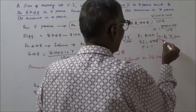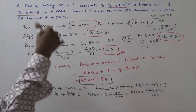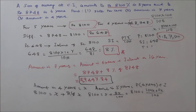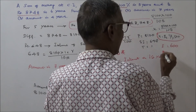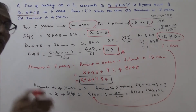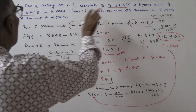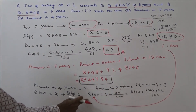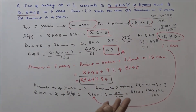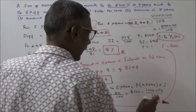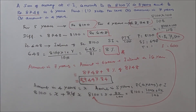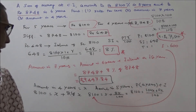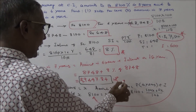Verification: the amount in 4 years is Rs.7500. Adding 8 percent of 7500, which is 600, gives 7500 plus 600 equals Rs.8100, which matches the given 5-year amount. So the amount in 4 years is Rs.7500. This is the third question answer.